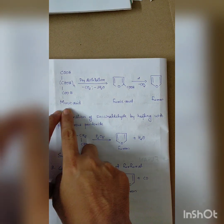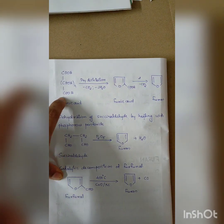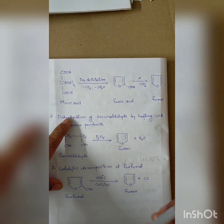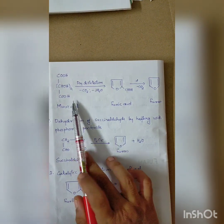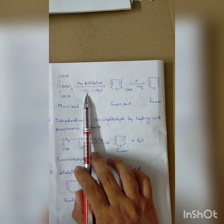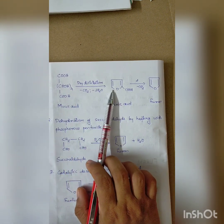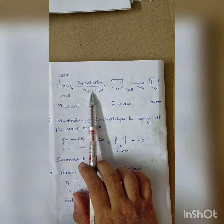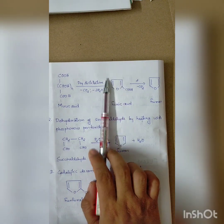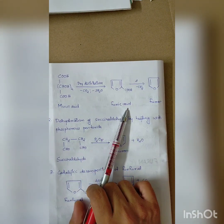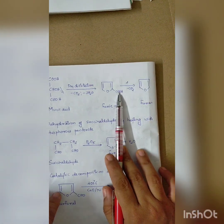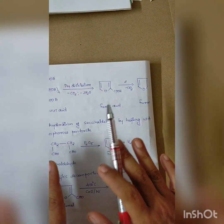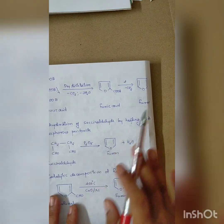The mucic acid structure is a 4-5-6 carbon acid. Upon dry distillation, it first gives furoic acid. The furoic acid then undergoes decarboxylation — carbon dioxide is eliminated — to give Furan.